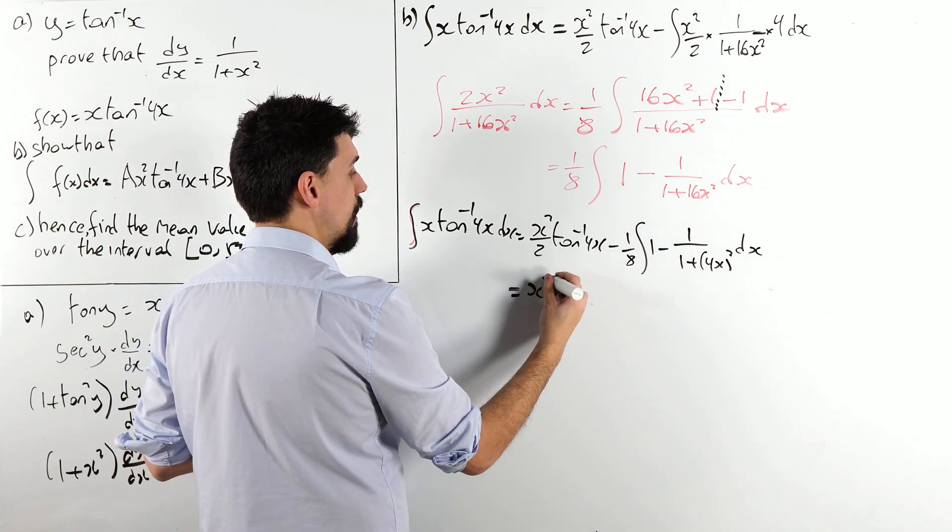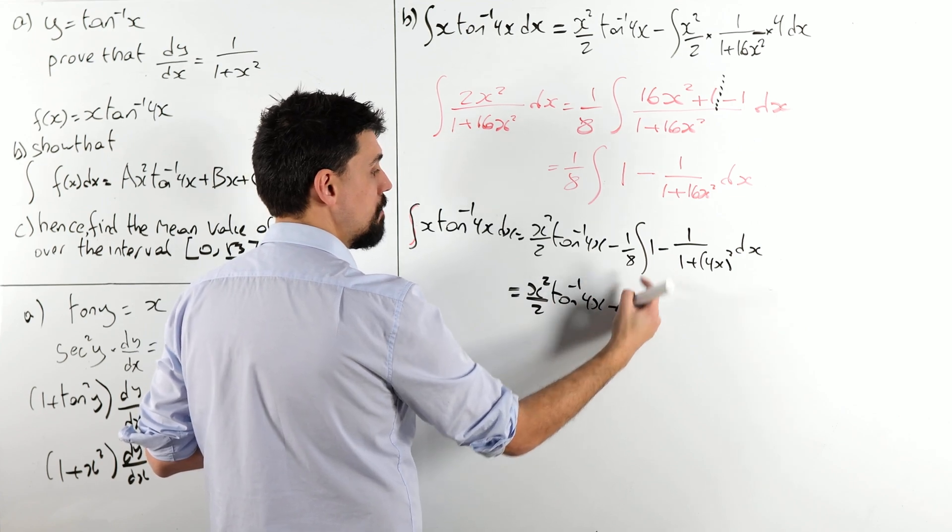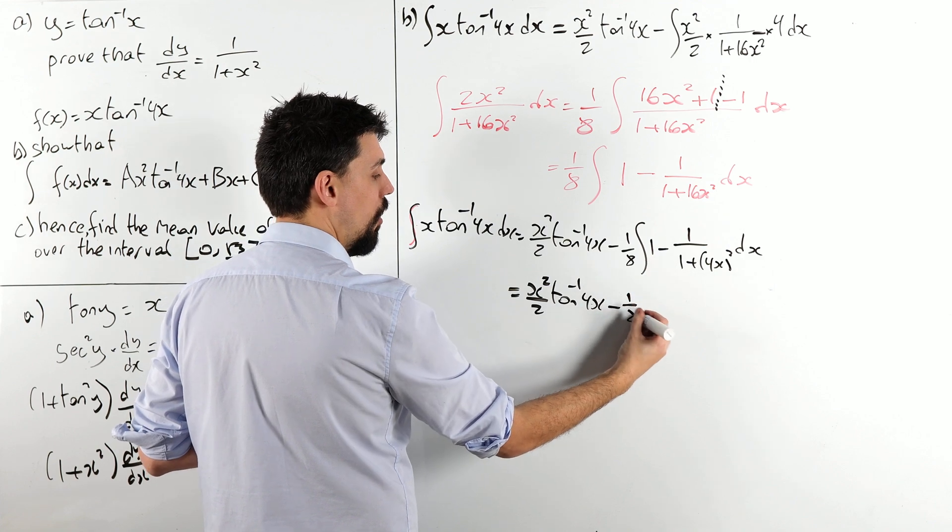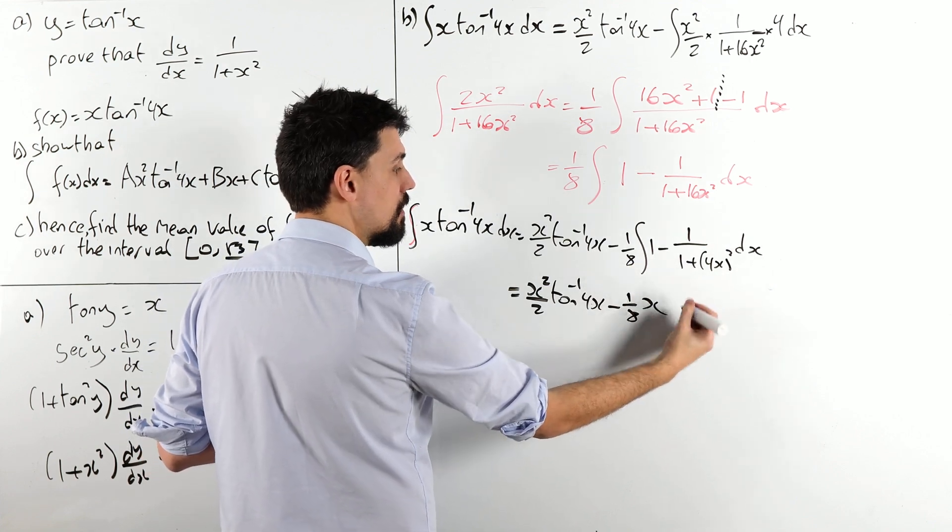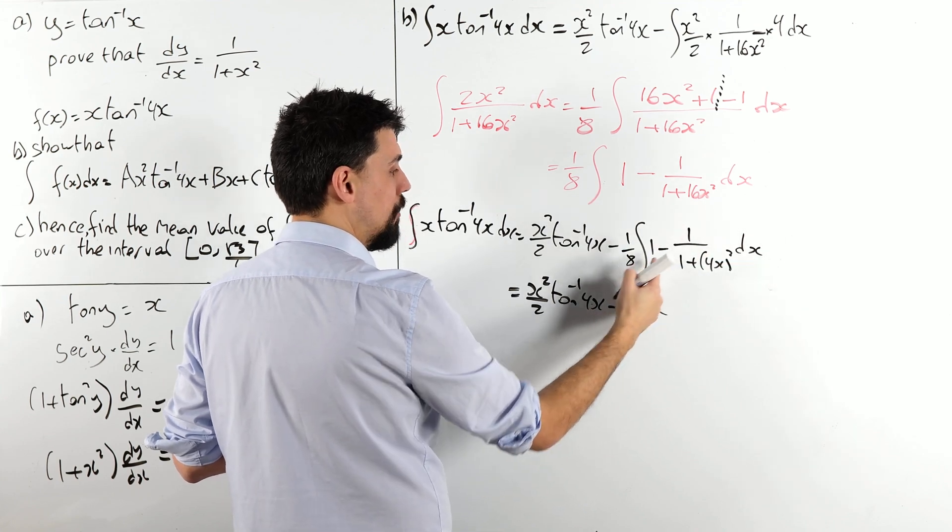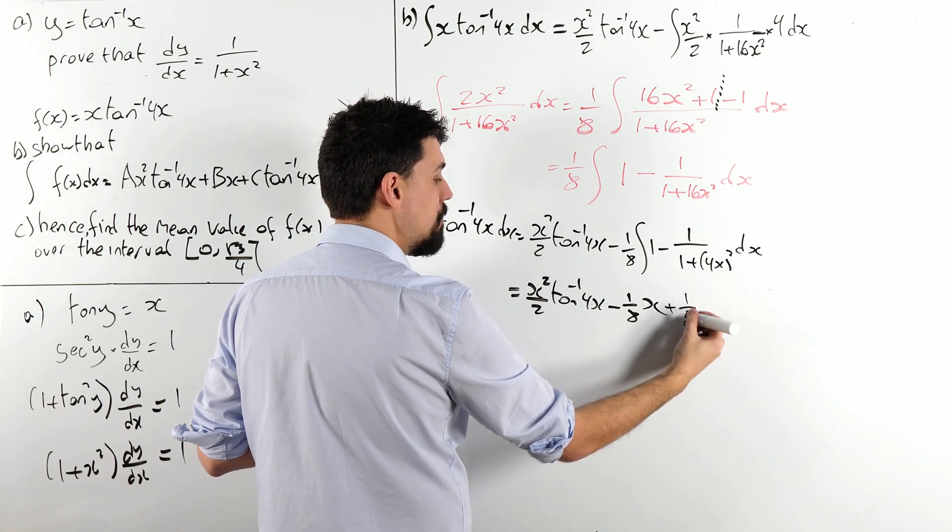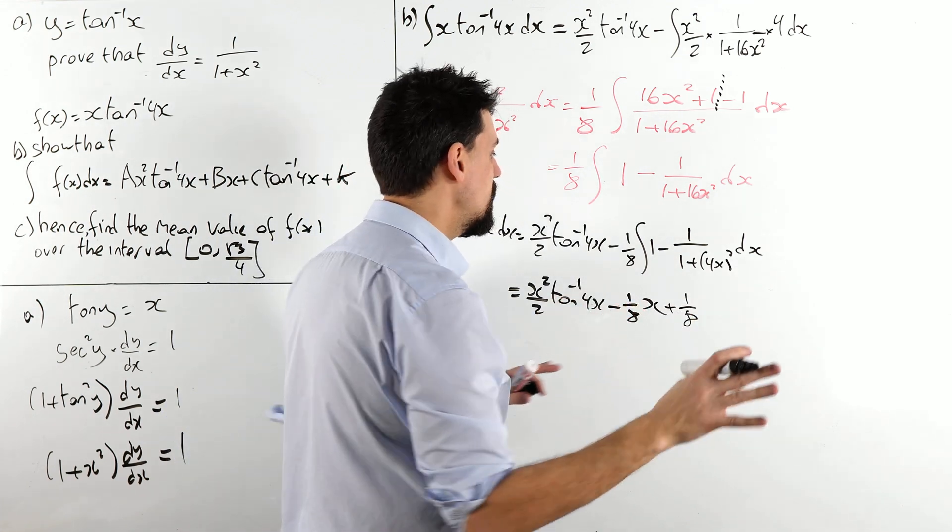So, this gives me x squared over 2 tan minus 1 of 4x minus 1 eighth of 1 integrates to x, smashing. Now, this, we'll have to be careful, minus minus, I'm going to go for a plus, I'm going to take my time, I'll figure out all the fractions in a second.